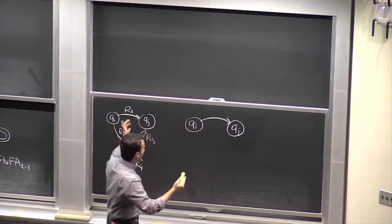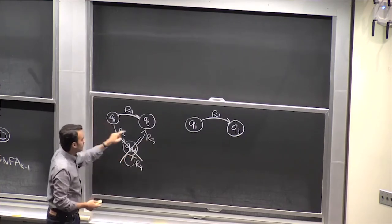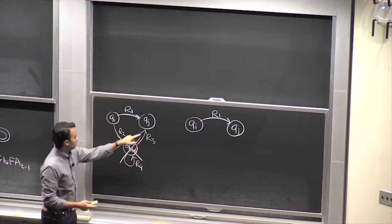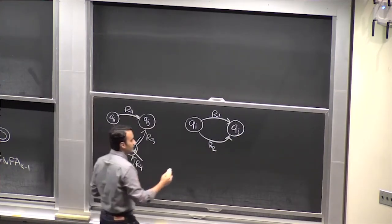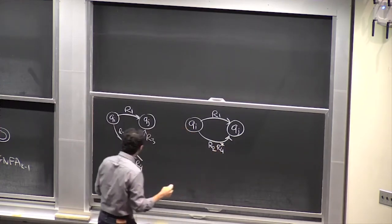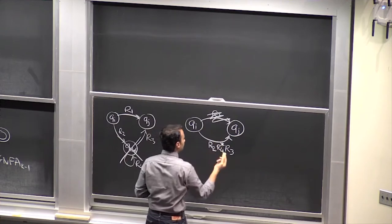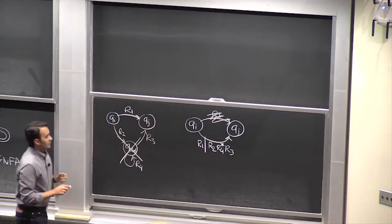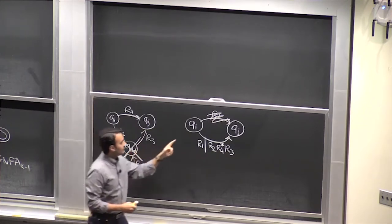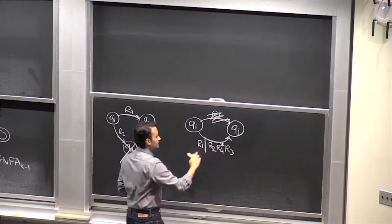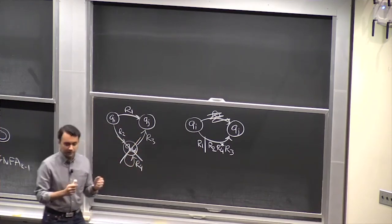R1 remains — you can still reach qj from qi with R1. For paths that go through q_del: you first accept R2 to get to q_del, then loop around as many times as you like (R4 star), then R3 to get to qj. So the new transition from qi to qj becomes R1 union (R2 · R4* · R3). You need to do this procedure for every pair of states once you delete q_del.